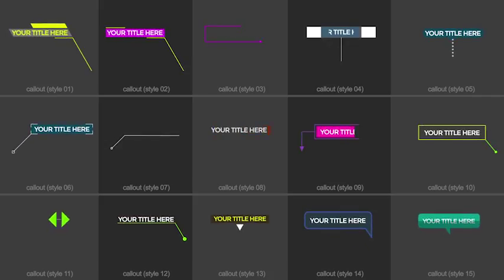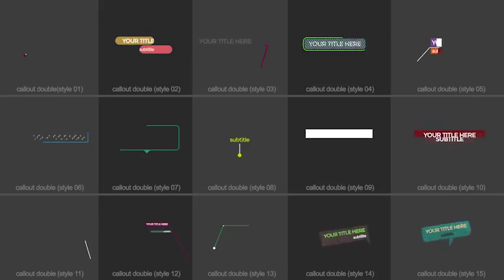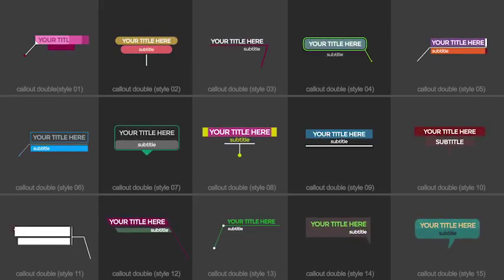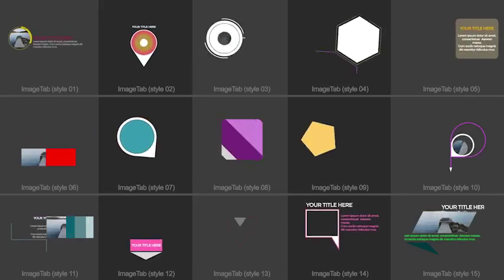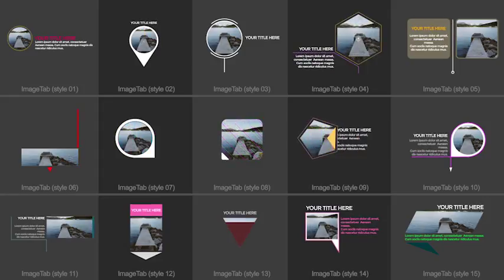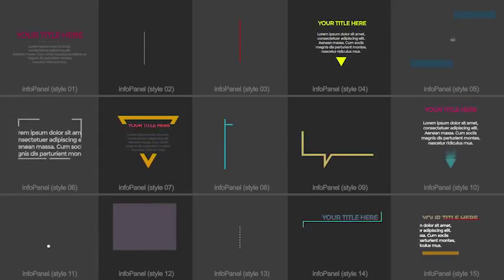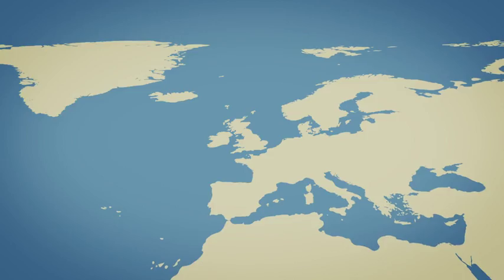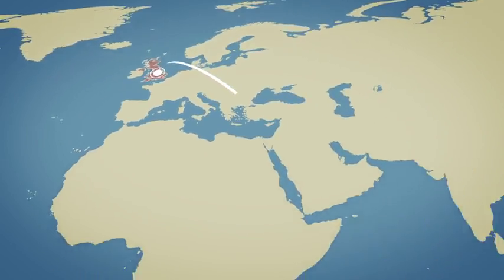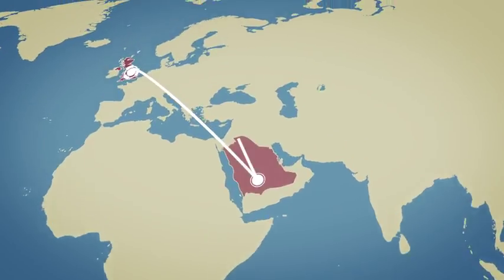Earth Map Connections offers 60 elements, including callouts and info tabs. And if you want a different look, you can instantly turn the Earth Map into a vector map.